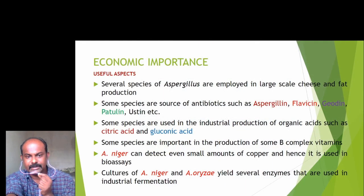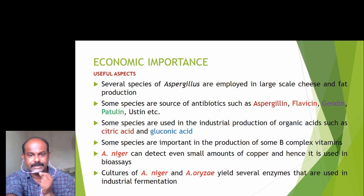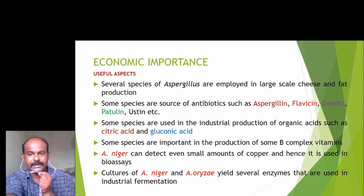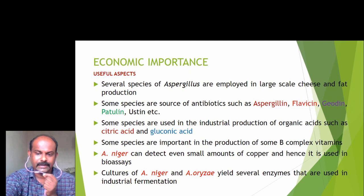Regarding economic importance, several species of Aspergillus are employed in large-scale cheese and fat production. Some species are sources of antibiotics such as aspergillin, flavacin, geodine, patulin, and astin. Some species are used in the industrial production of organic acids such as citric acid and gluconic acid. Some species are important in the production of B-complex vitamins. Aspergillus niger can detect even small amounts of copper and hence is used in bioassays. Culture of Aspergillus niger and Aspergillus oryzae yields several enzymes used in industrial fermentation.